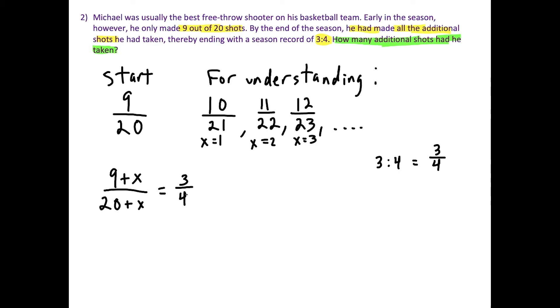So then all we have to do here is solve this equation for x. And we'll know how many additional shots that Michael had to take. So we cross multiply here. And we're going to have 4 times 9 plus x in parentheses is equal to, and we have 3 times 20 plus x. So to solve this equation, we're going to have to distribute both sides. So we have 36 plus 4x equals 60 plus 3x.